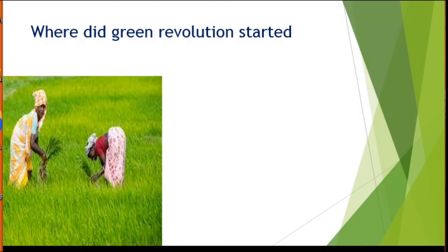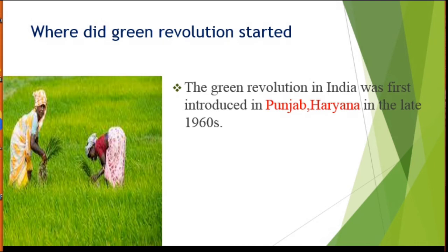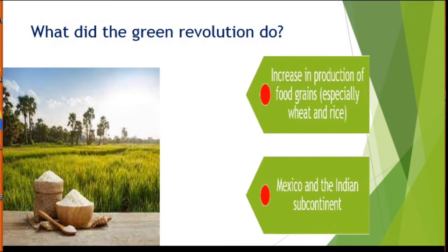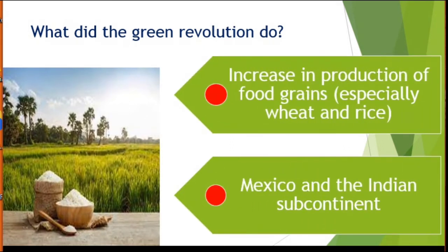Where did Green Revolution start? The Green Revolution in India was first introduced in Punjab and Haryana in the late 1960s by international donor agencies and the government of India. What did Green Revolution do? The Green Revolution mainly aimed to increase crop production and make India self-sufficient.